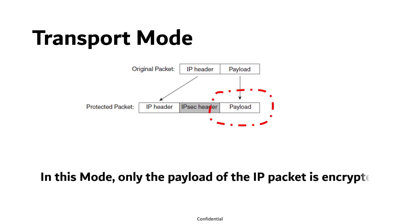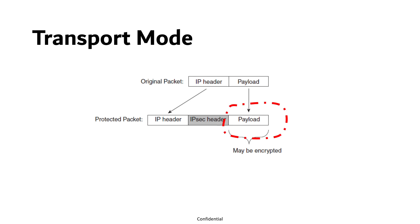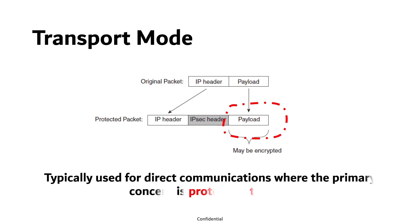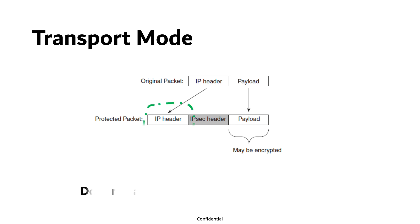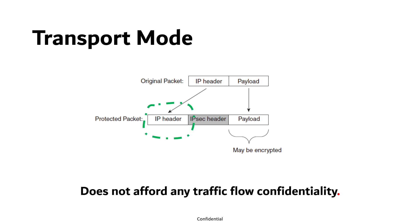In transport mode, only the payload of the IP packet is encrypted, not the entire packet. This mode is typically used for direct communication where the primary concern is protecting the data rather than obscuring the communication pattern, but it does not afford any traffic flow confidentiality, as the original source and destination addresses are left intact.